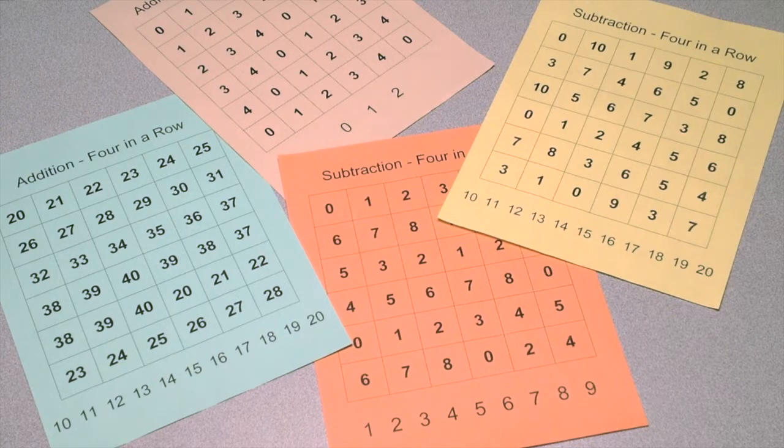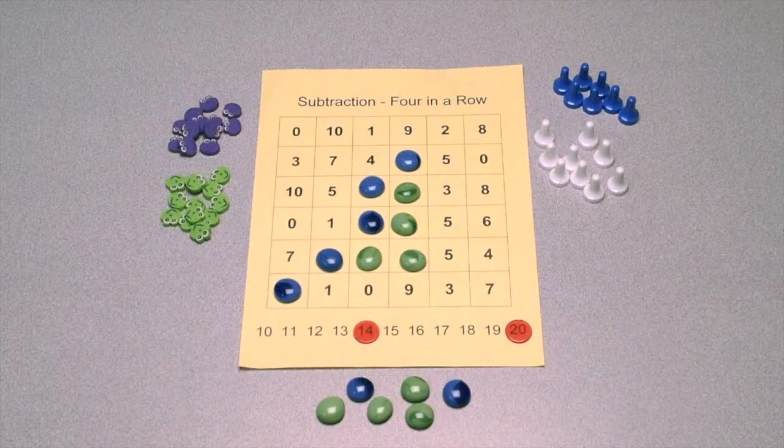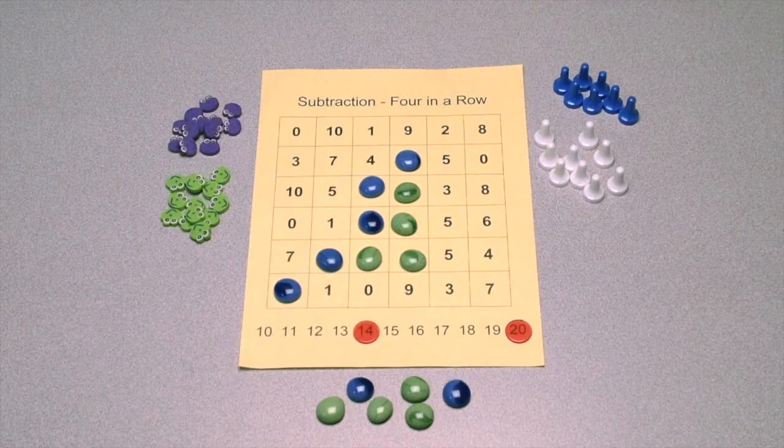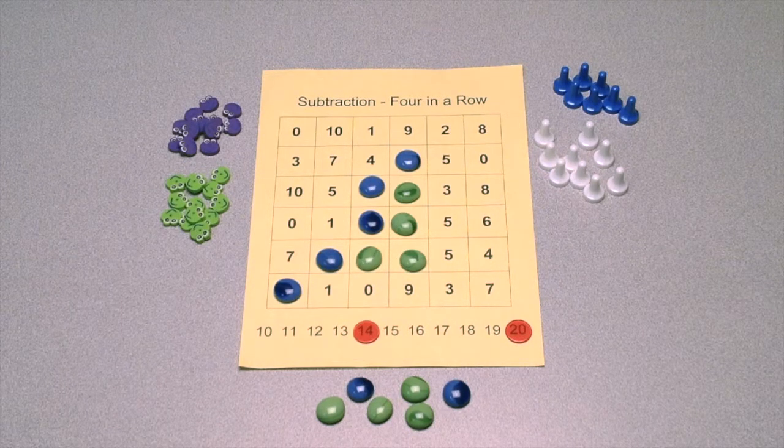Cards for multiplication can be found in the multiplication 4 in a row bundle. We can keep this activity interesting for students by replacing the dry erase markers with other objects to cover the board. Here are some examples.